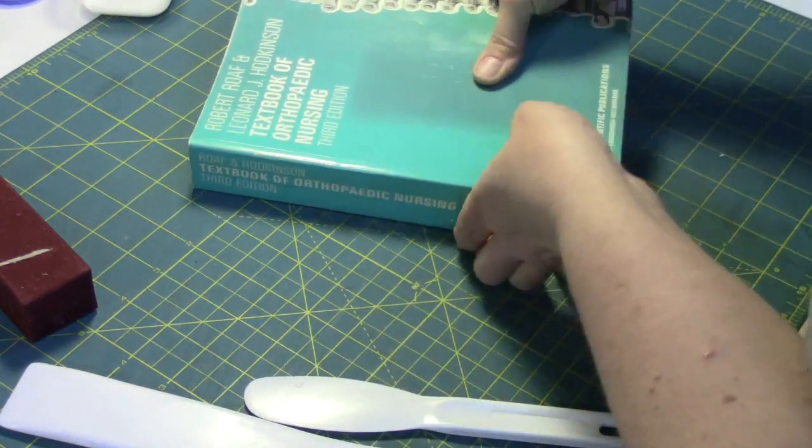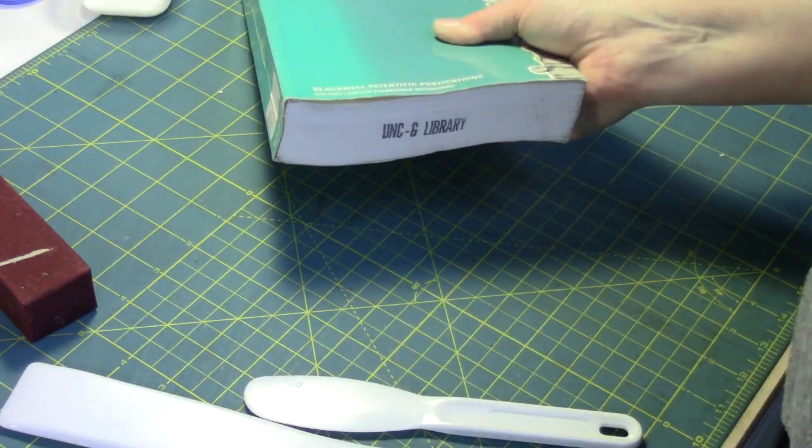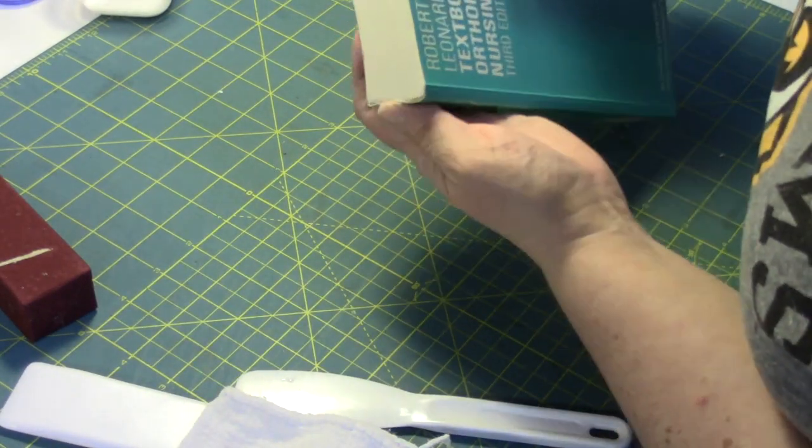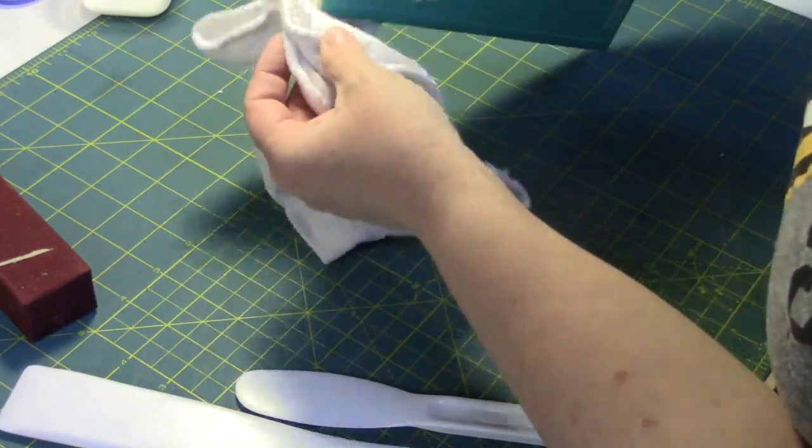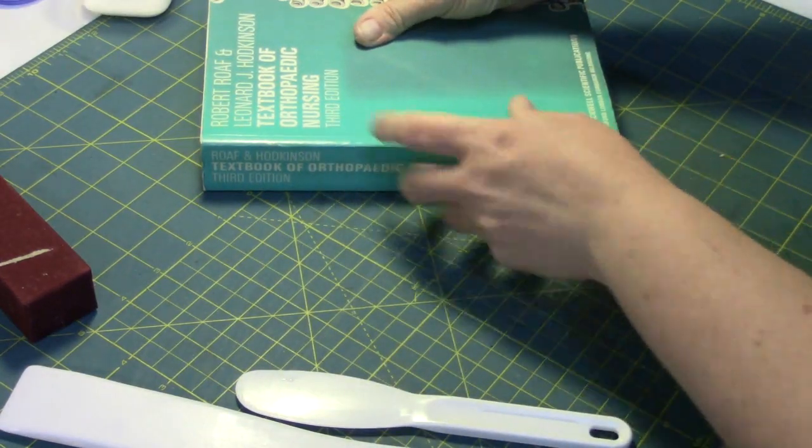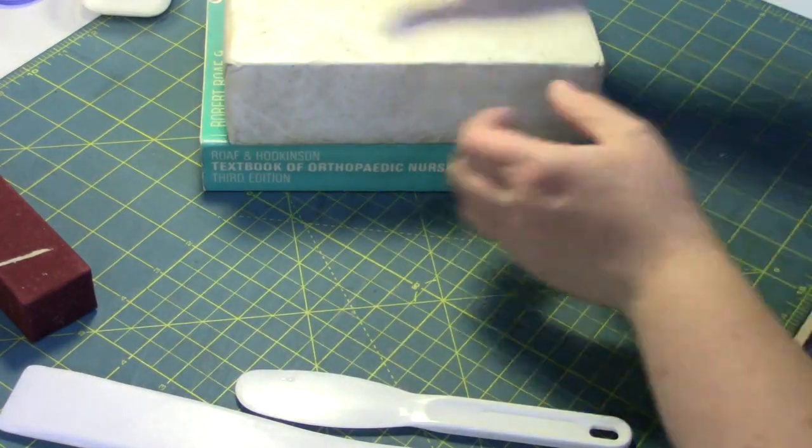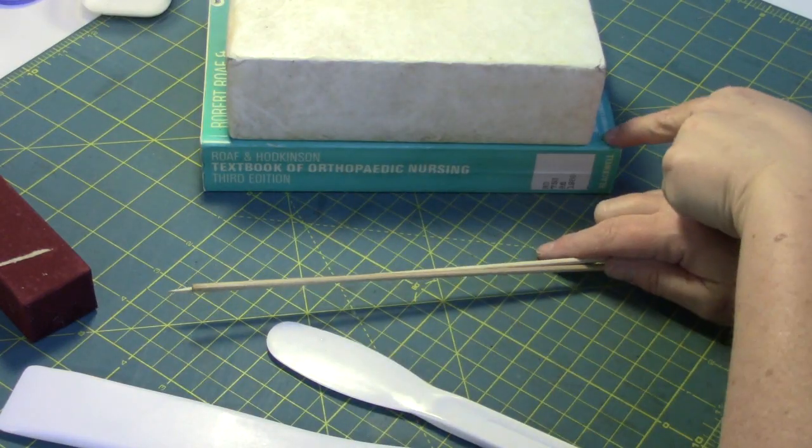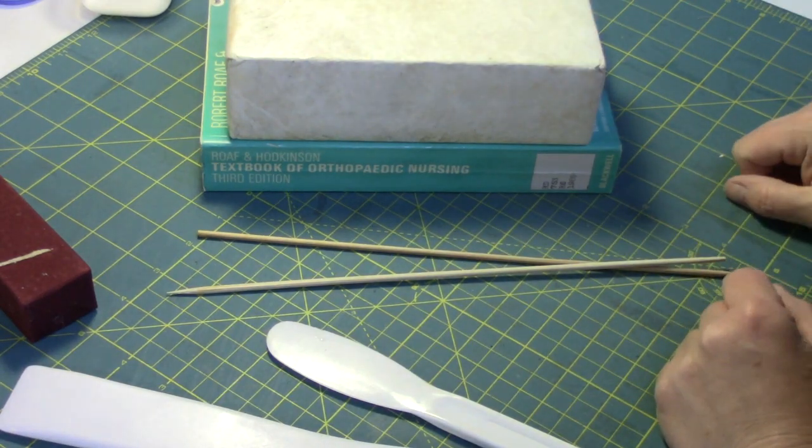If you have any adhesive that comes out the end, then you can just wipe that on your cloth. I'm going to make sure that it's adhered really well, again I have a little extra adhesive. Then take my brick and I'll put it on it, and this time I'm not using the bamboo skewers because there isn't a shoulder on this book, being that it's a paperback book, so I'll just leave the brick on it. And again, ideally, leave it overnight to dry.